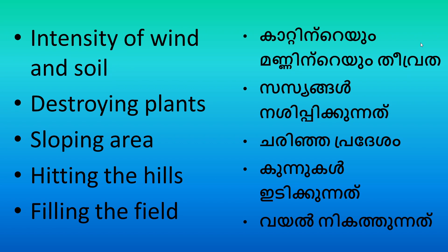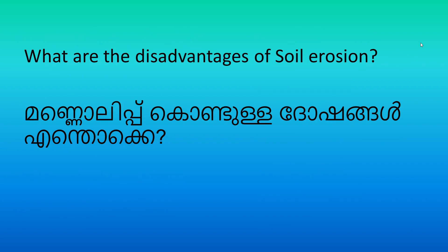Hitting the hills, filling the field — intensity of wind and soil, destroying plants, sloping area, hitting the hills, filling the field. What are the disadvantages of soil erosion? How to prevent soil erosion?